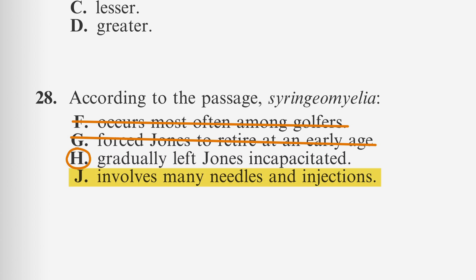And choice J, involves many needles and injections, is a tricky one designed to confuse you by throwing in the word syringe. But you can avoid falling into their trap if you remember that this is a specific detail question that says according to the passage, meaning that no outside vocabulary is needed.